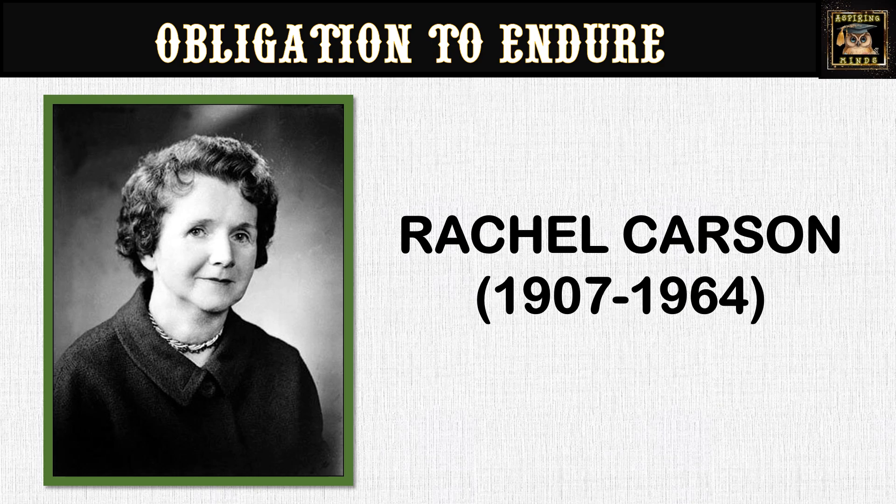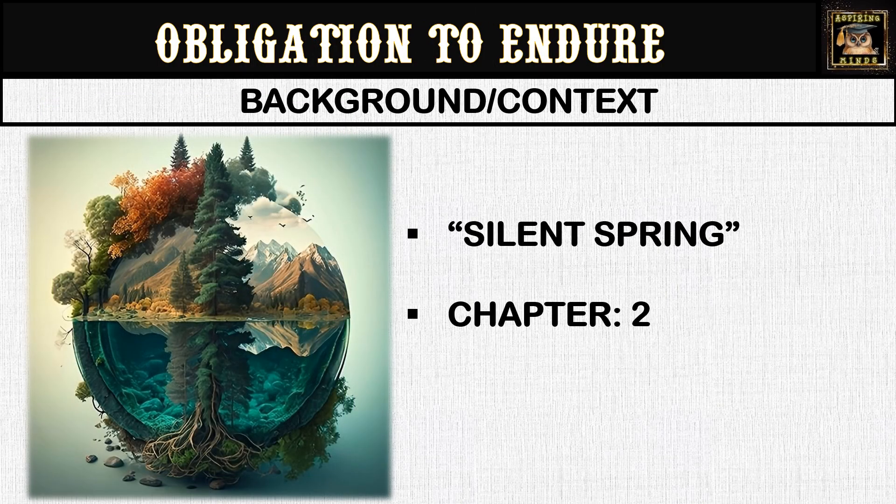Her most influential work is Silent Spring, which was published in 1962 and brought widespread attention to the dangers of pesticides and led to significant environmental reforms and changes. The Obligation to Endure is a chapter from this groundbreaking book. Written in the early 1960s, this chapter addresses the detrimental impact of synthetic chemicals, particularly pesticides, on the environment. During this period, the use of these chemicals was increasing with very little consideration for the long-term effects on ecosystems and human health. Carson's work was instrumental in generating awareness and launching the modern environmental movement, alongside promoting legislative and regulatory changes regarding pesticide use.